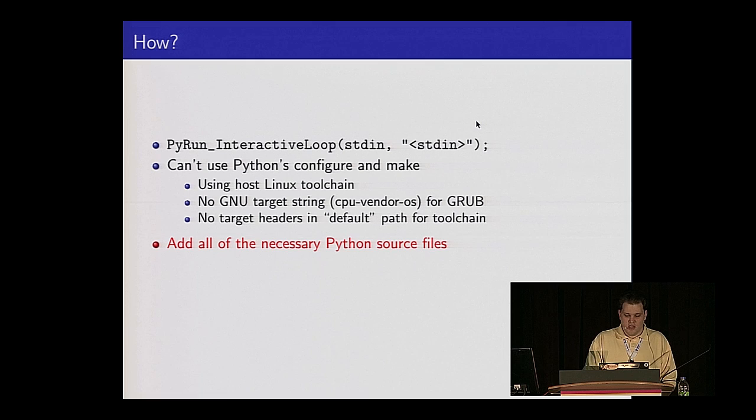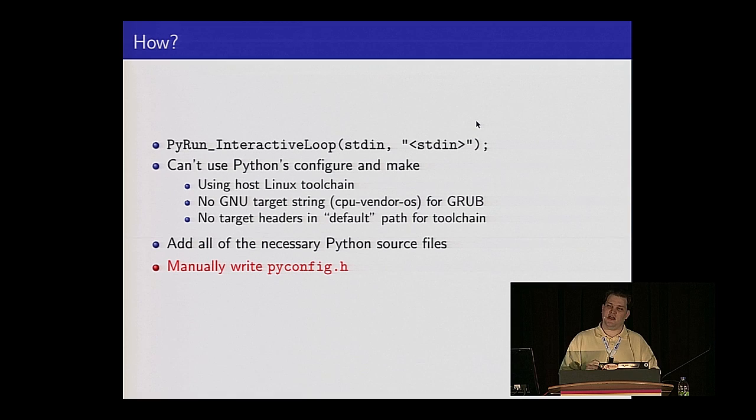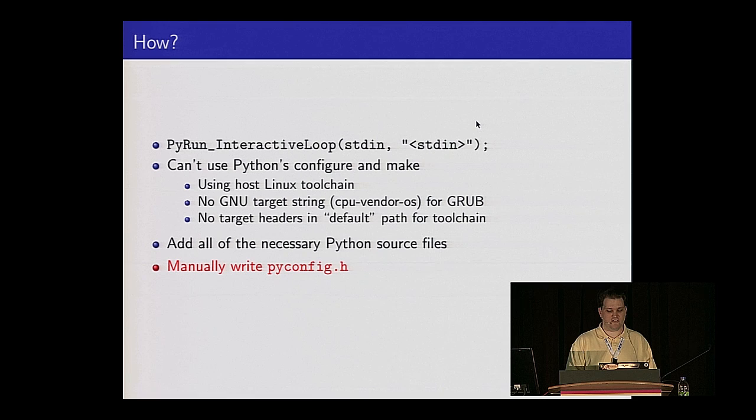Then we manually wrote out the configuration file, pyconfig.h — the file that autoconf and autoheader would normally write out, that tells you 'I have this feature, I don't have that feature.' We have a very long list of 'no, I don't have' and a handful of 'yes, we do actually have this' — for ways that Python needs to work around shortcomings of the operating system. Well, we don't have an operating system, so we don't have a lot of those functions. But anything that Python requires to run, and a handful of optional items, we went ahead and added.